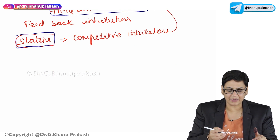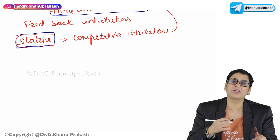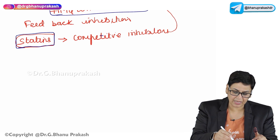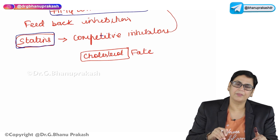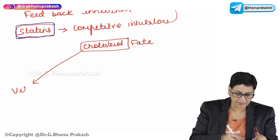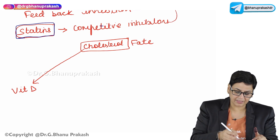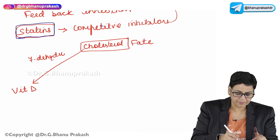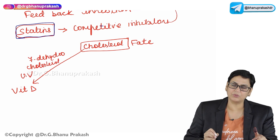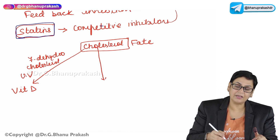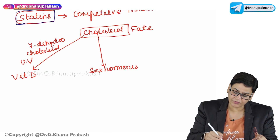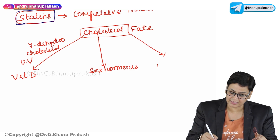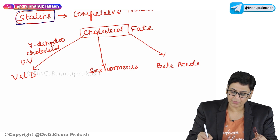What is the importance of cholesterol? Cholesterol is a very important precursor of many compounds in the body. It is required for the synthesis of vitamin D, also known as the sunshine vitamin — 7-dehydrocholesterol is required, which in the presence of UV rays from the sun forms vitamin D. Cholesterol is also a precursor of many sex hormones, and most importantly it is required for the synthesis of bile acids — both primary and secondary bile acids.